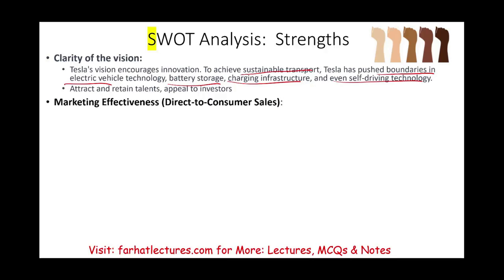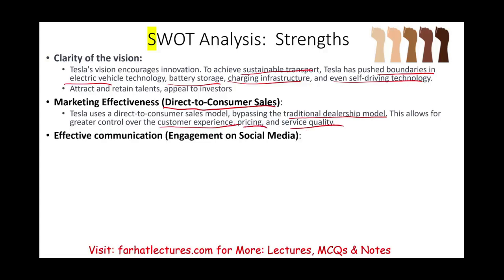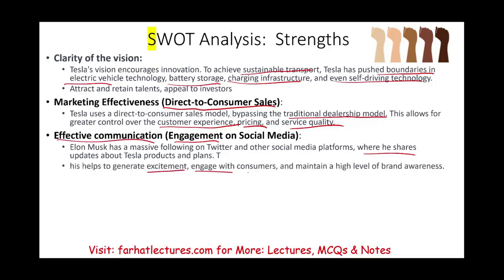Tesla also has marketing effectiveness. They have a direct-to-consumer sales model, bypassing the traditional dealership model — which is a strength because it cuts costs and allows them to control the customer experience, pricing, and service quality. They also have effective communication with stakeholders through heavy engagement on social media. For example, Elon Musk has a large following on Twitter where he shares updates about Tesla products and plans, which helps generate excitement, engage consumers, and maintain high brand awareness.